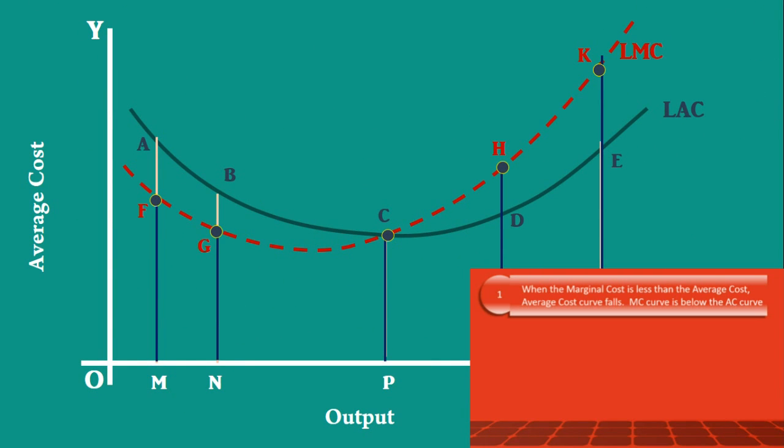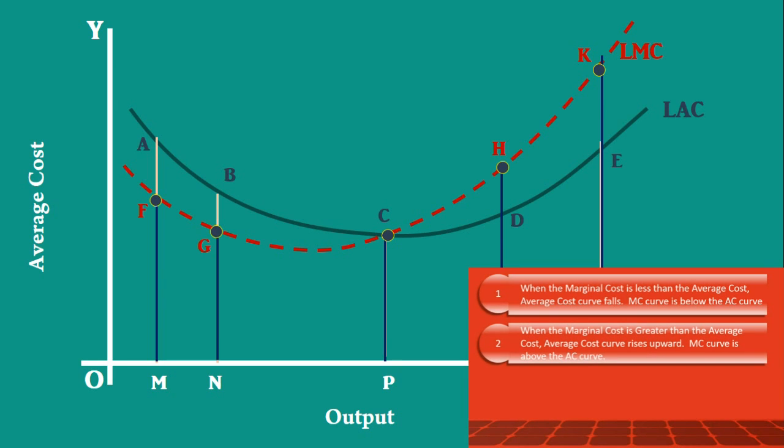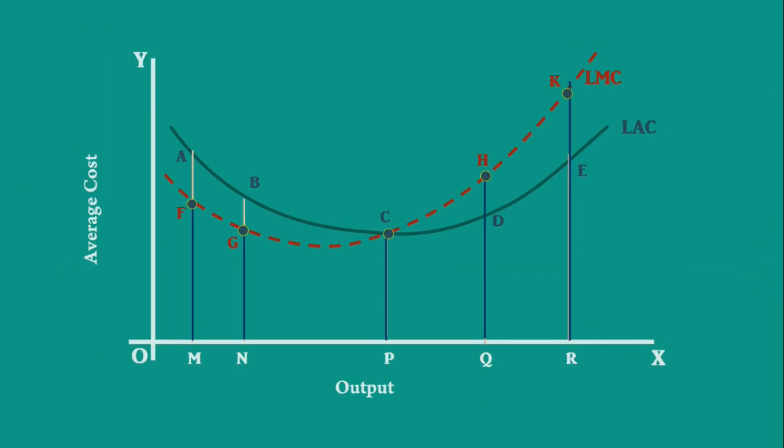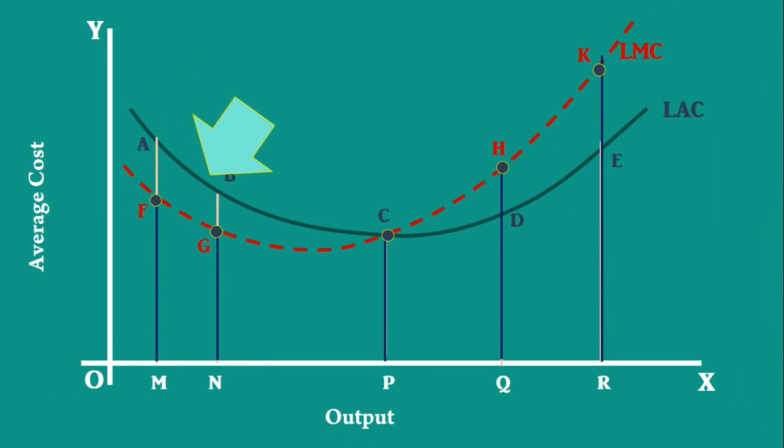Relations between Long Run Average Cost Curve and Long Run Marginal Cost Curve are similar to relations between Short Run Average Cost Curve and Short Run Marginal Cost Curves. When Long Run Marginal Cost Curve falls, Long Run Marginal Cost is less than Long Run Average Cost.